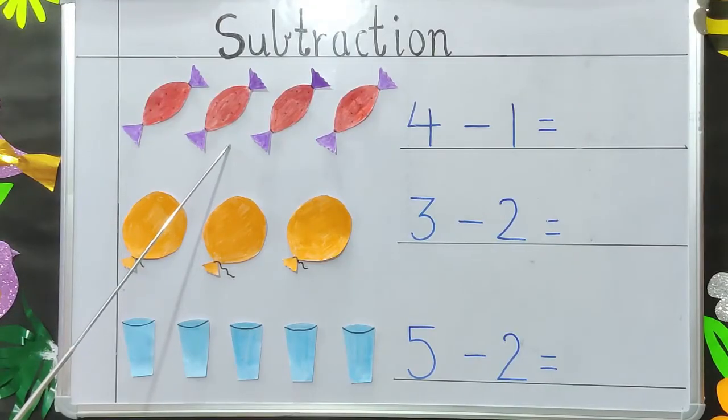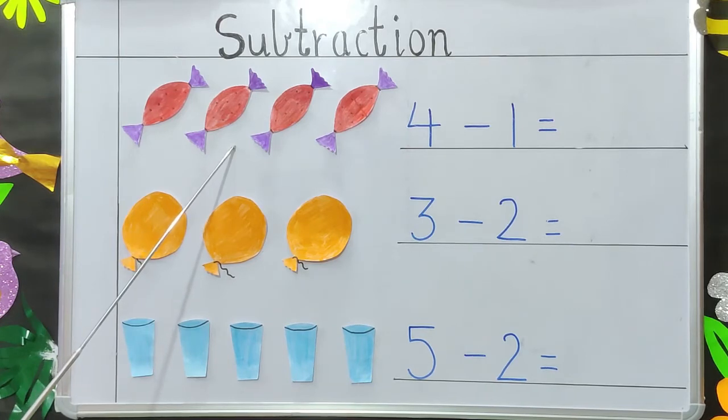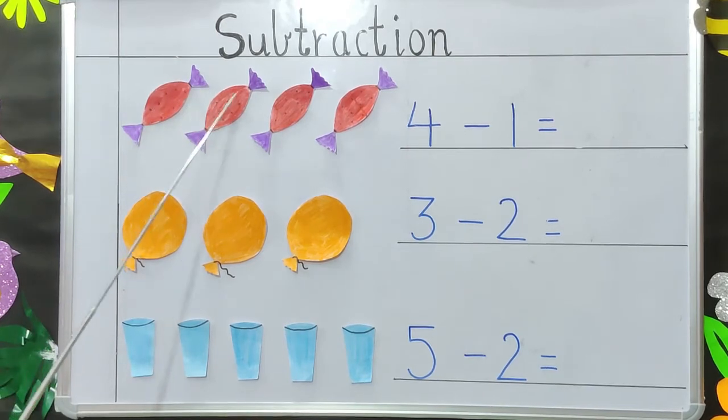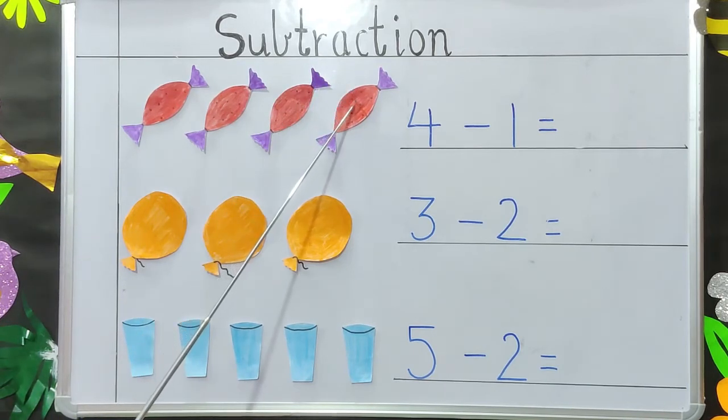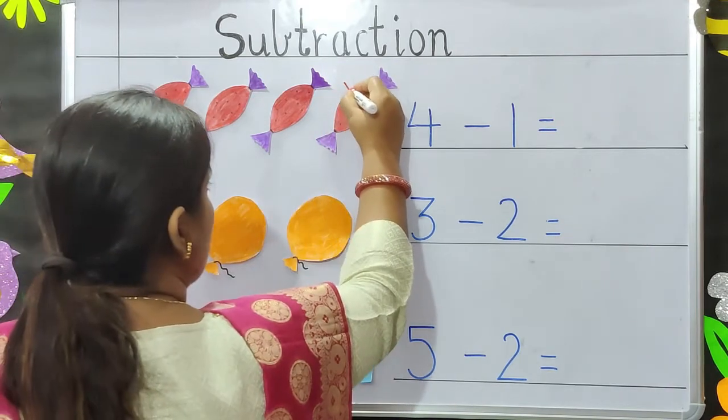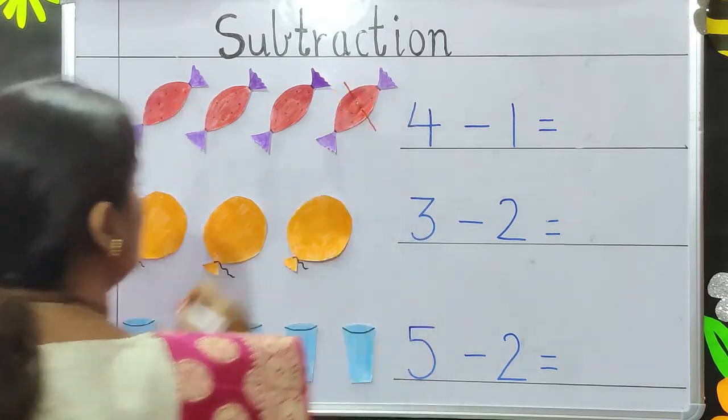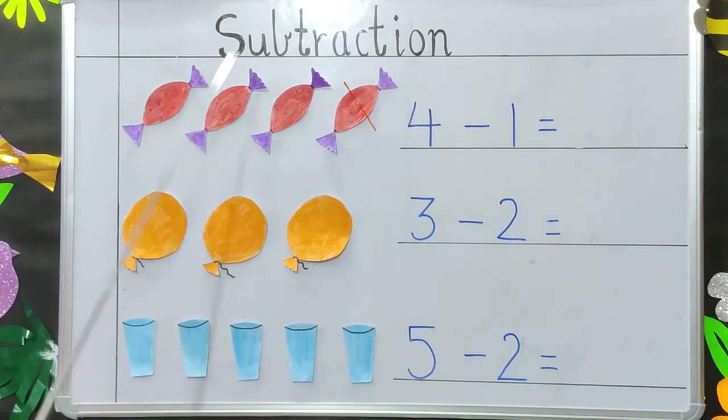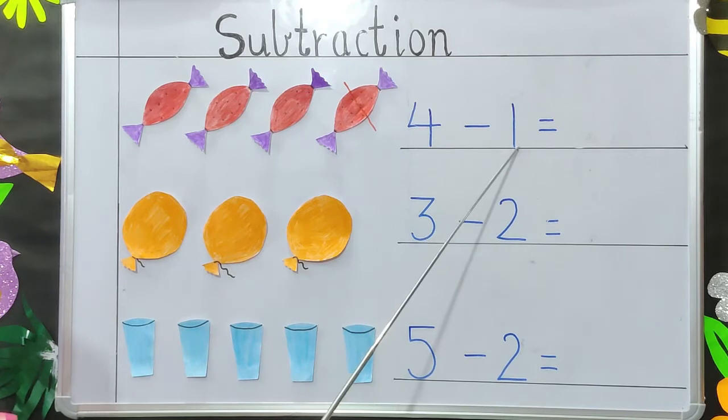Now children, suppose you have four toffees: 1, 2, 3 and 4. And you give away one toffee to your friend. Then, how many toffees will be left with you? 1, 2 and 3. So, 4 minus 1 will be 3.